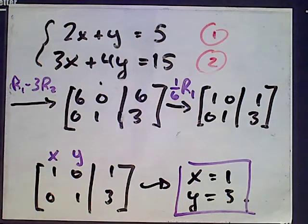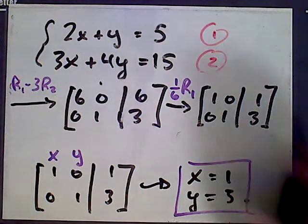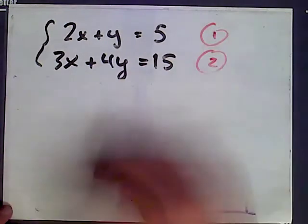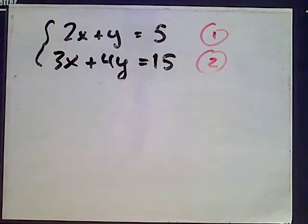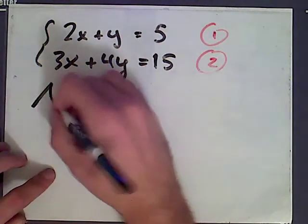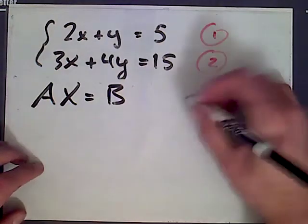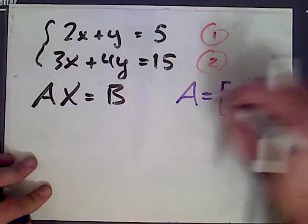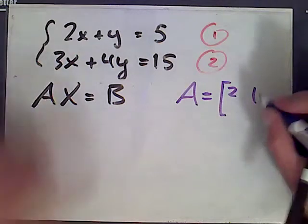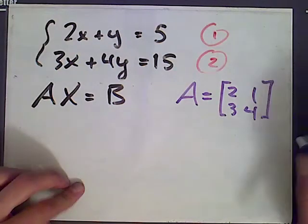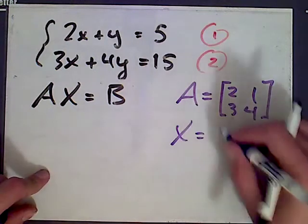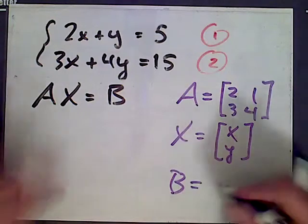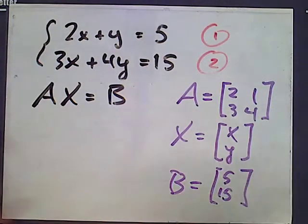Next I want to talk about inverse matrices. The equation we had, the matrix equation, was Ax equals b, where A was what's sometimes called the coefficient matrix. A was 2, 1, 3, 4; x is the solution set, the numbers we're looking for; and b are the constants 5, 15.